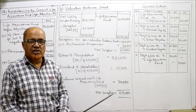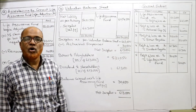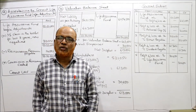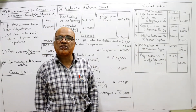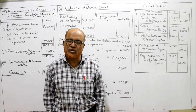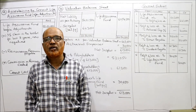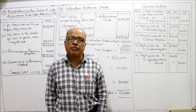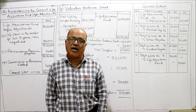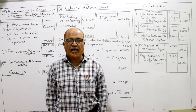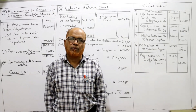So we have completed all the short problems. In the first video we completed the theory of accounts of life insurance companies. In this video we completed the short problems on life insurance companies. In the next video we will start the main problems.